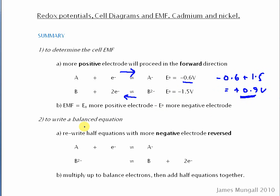To write the balanced equation, rewrite the half equations with the more negative electrode reversed. Then multiply up to balance the electrons — if you want two electrons on each side, balance accordingly. Then take all the species from the left-hand sides to form the left of the overall equation, and all the right-hand side species to form the right, and the electrons cancel out.